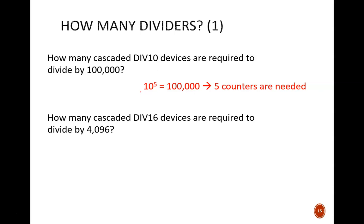A quicker way to see this is to realize that 10 raised to the fifth power produces 100,000. The 10 is the division from each device. The 100,000 is the total division desired. The five is what we found to be the number of devices needed. Next problem is a little trickier, only because we are less used to working in hexadecimal. How many cascaded div 16 devices are required to divide by 4096? Pause the video. The answer here is three. One device would divide by 16. The second divides that by 16, giving 256. The third divides that by 16, giving 4096. Or, succinctly, 16 raised to the power of 3 yields 4096. So, three devices are needed.